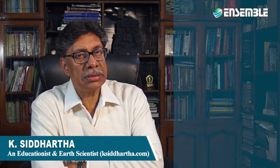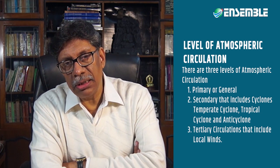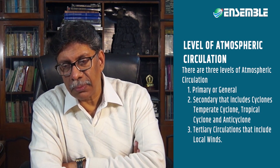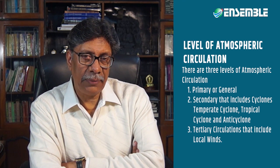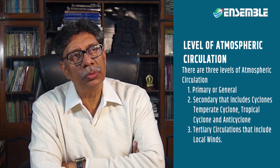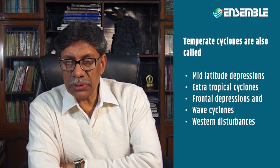Atmospheric circulation takes place at three levels. The first is the primary circulation, the second level is the secondary circulation, and the third level is the tertiary circulation. Temperate cyclones are part of the secondary circulation.